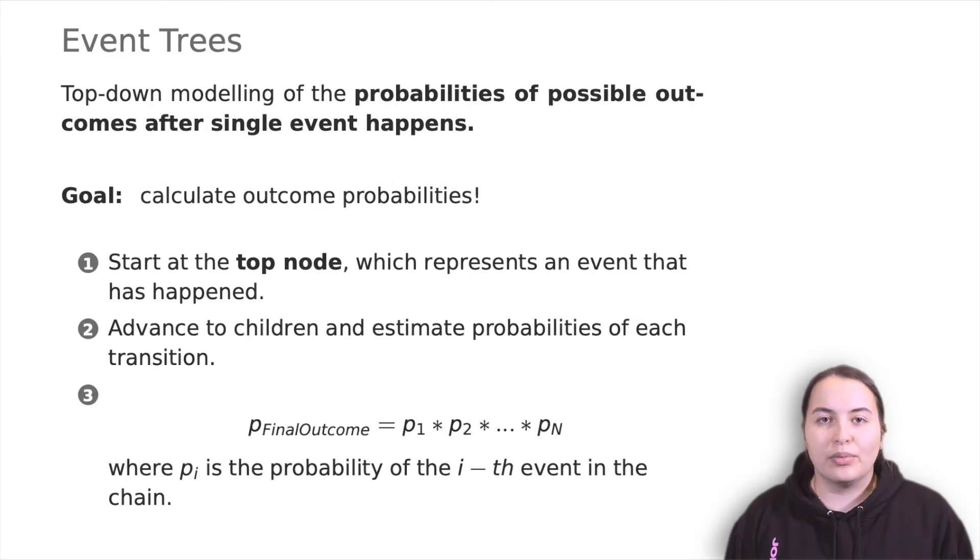The last tree type we will see in this video are event trees. Event tree analysis, ETA, is a powerful tool that will identify all consequences of a system that have a probability of occurring after an initiating event.